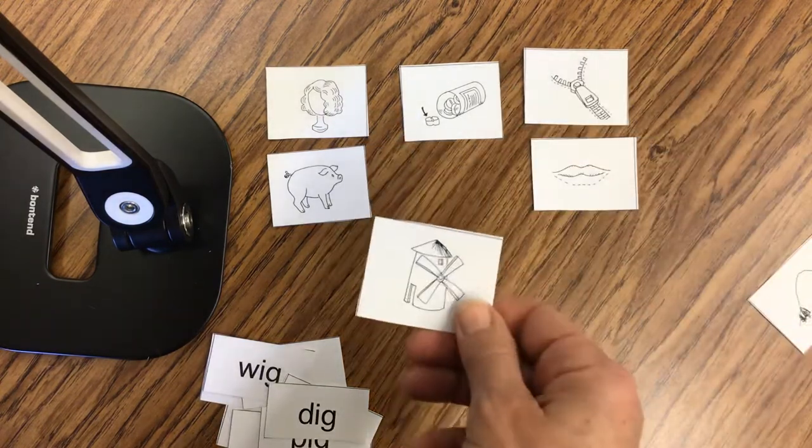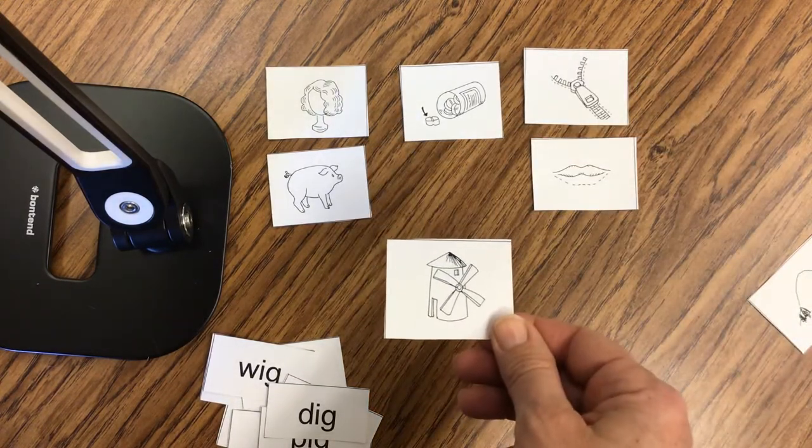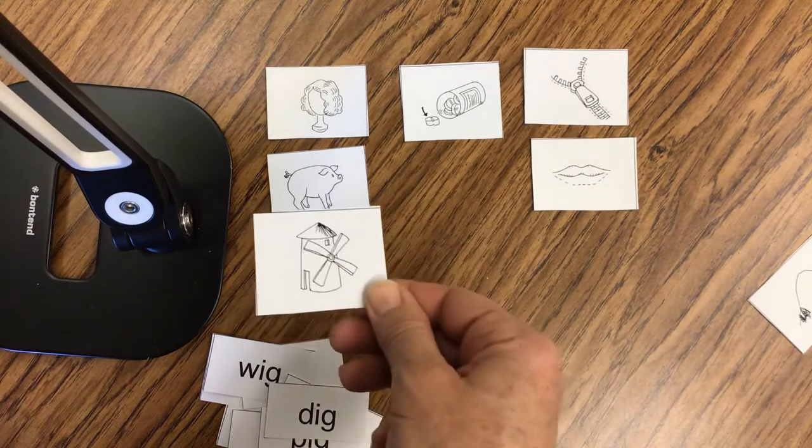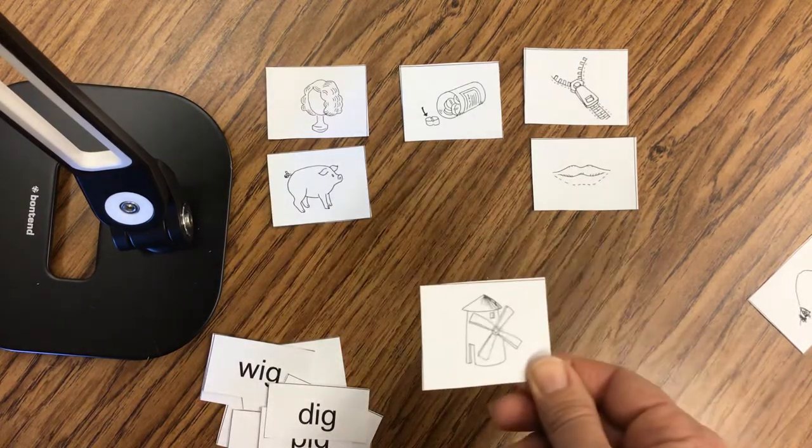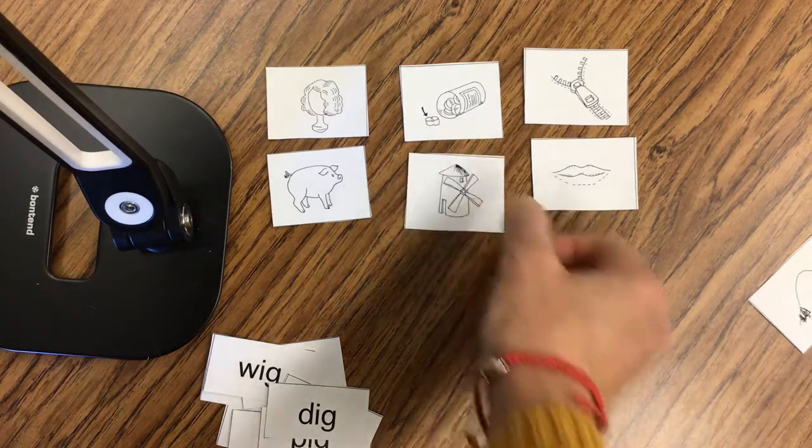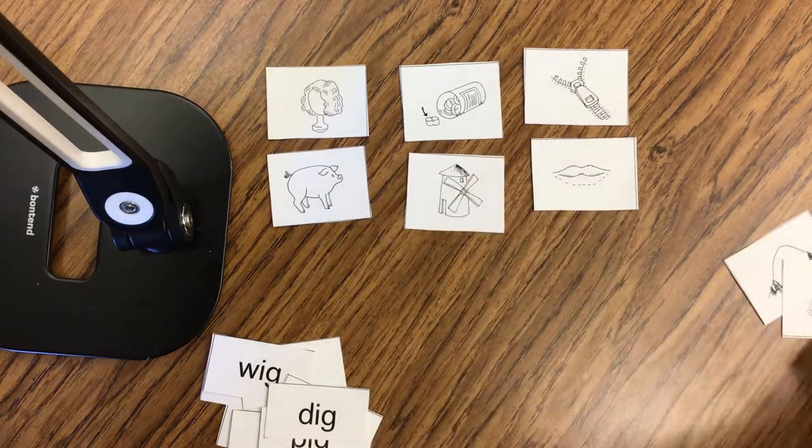How about mill? Find the mill. Mill, wig, mill, pill, mill, zip. You got it. Mill, pill. I hear that ill sound.